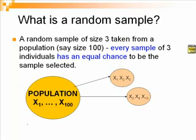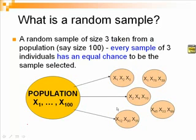I can also select X2, X4 and X10 as the sample. And there are many other possible samples of size 3 that can be selected from the population. If the sample is randomly selected, then all these samples stand an equal chance of being picked as the sample selected.